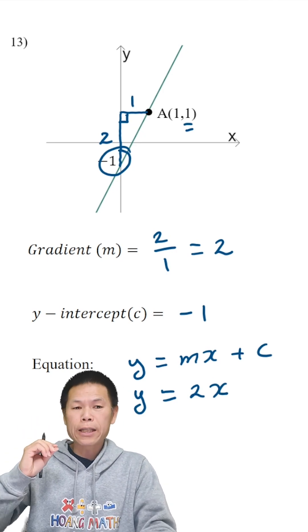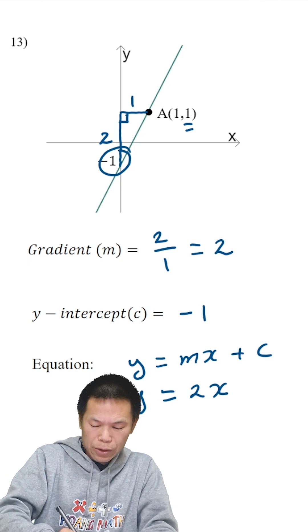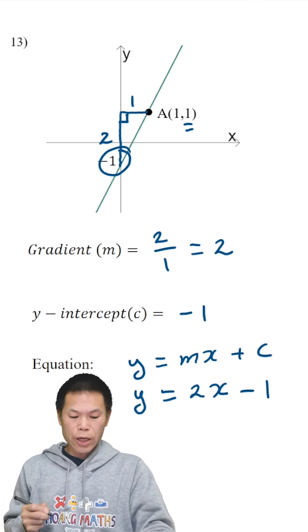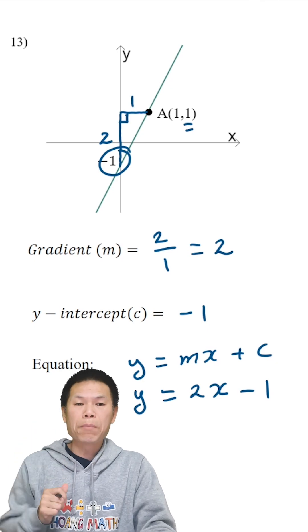And c is negative 1. So plus negative 1 becomes minus 1. So the equation is y equal to 2x minus 1.